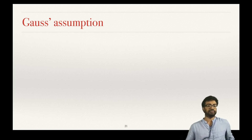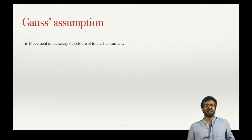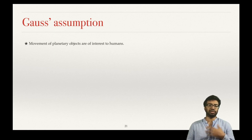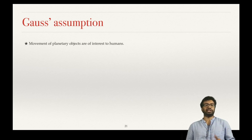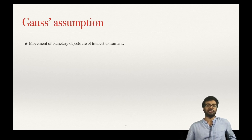Gauss was one of the greatest mathematicians to have lived. He was not just a mathematician — he was also an astronomer who studied the movements of planetary objects. Many mathematicians at that time used mathematics to predict the rotation of planetary objects like stars, planets, and the moon.